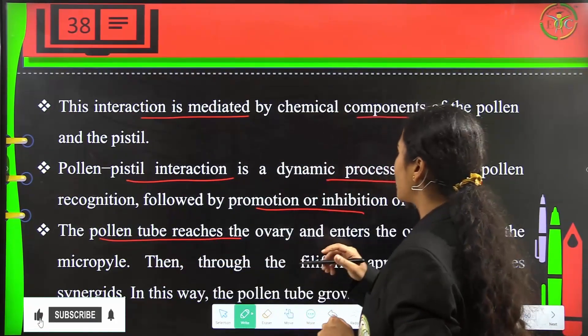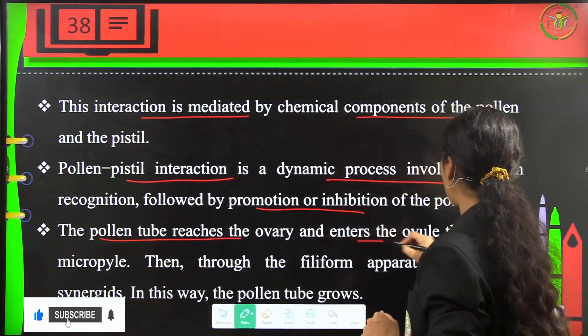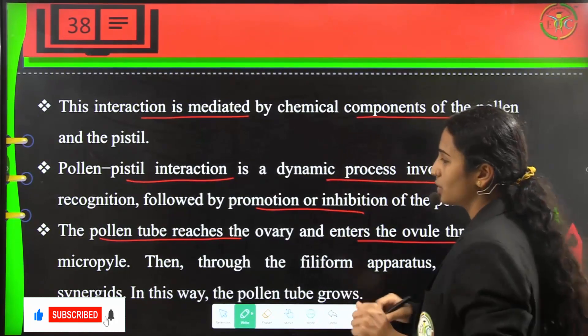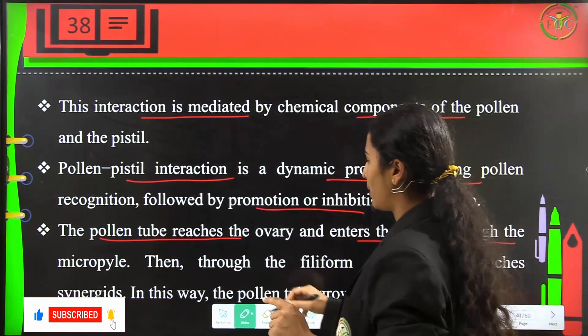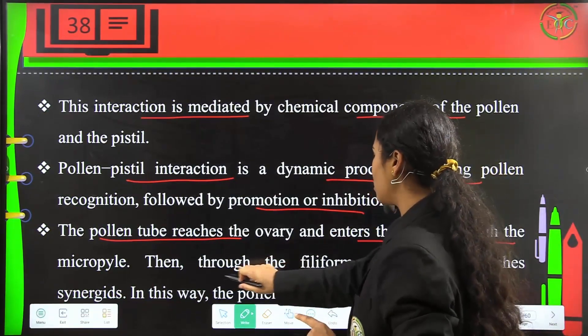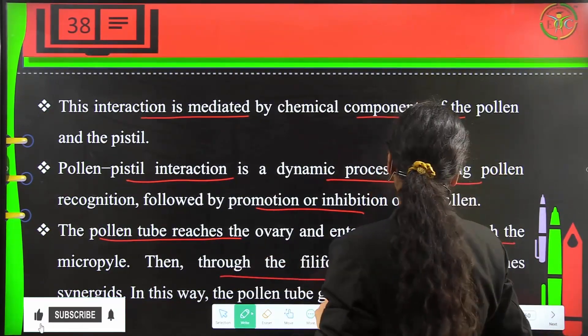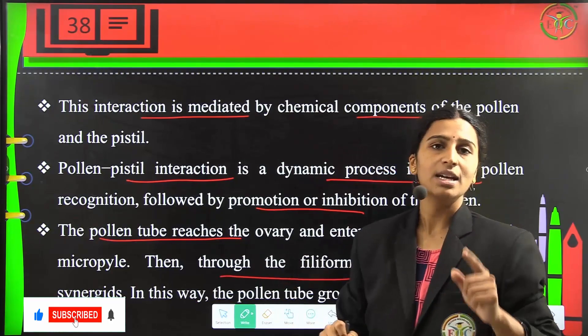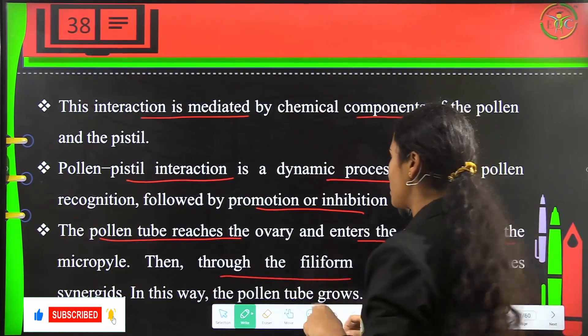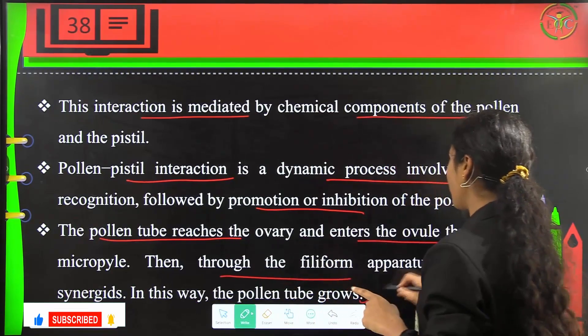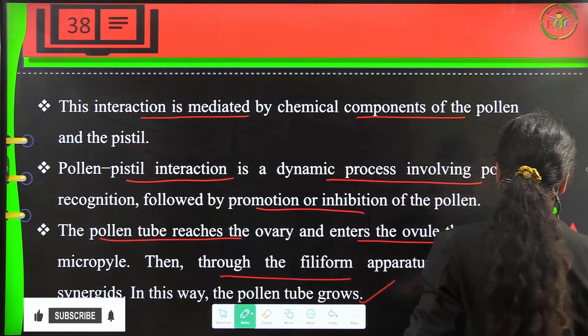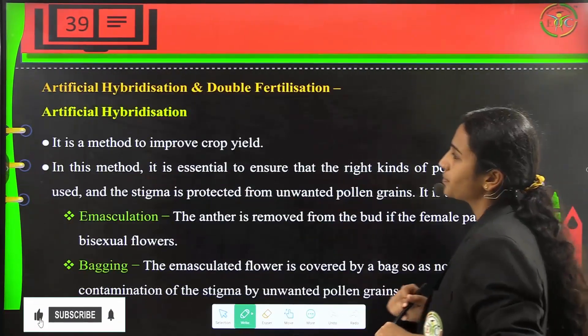The pollen tube reaches the ovary and enters the ovule through the micropyle. Through the filiform apparatus, it releases into the synergids, and this is how the pollen tube grows.